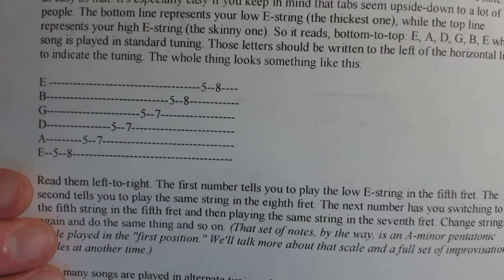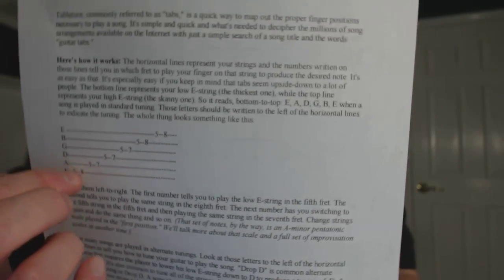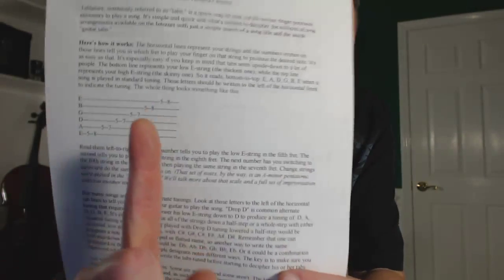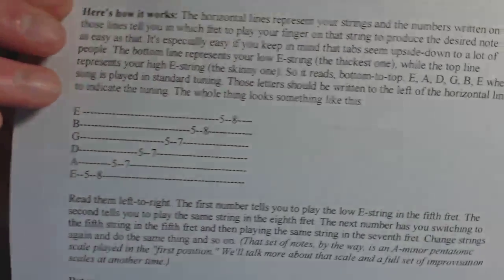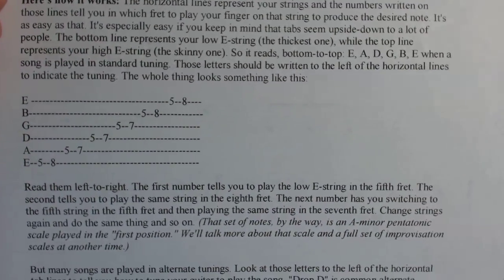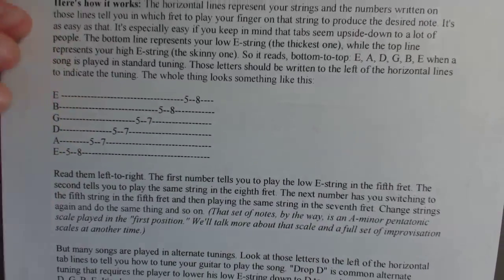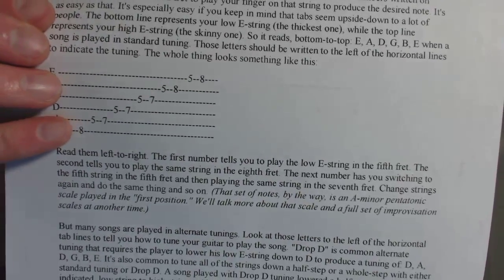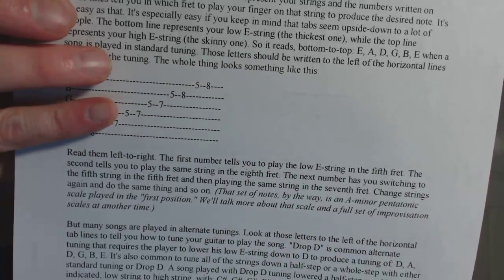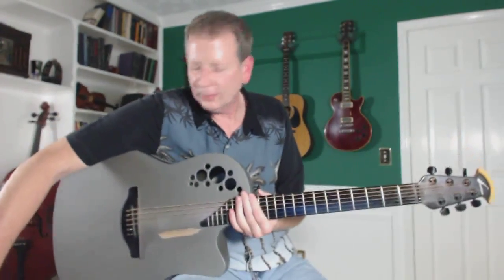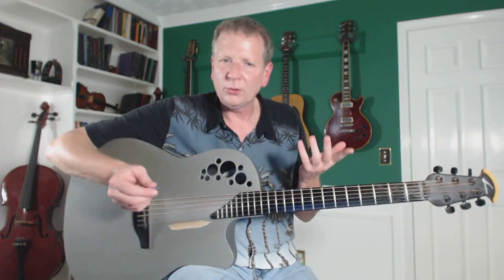It's very simple. Those numbers are just fret numbers, and you read it just like you're reading a book — left to right. If you have two numbers stacked on top of each other, that means you play them at the same time. None of these are stacked, so all these are individual notes. So that very first thing, you're playing the 5th fret on the low E string, then the 8th fret on the low E string. Then move up to the 5th string and play the 5th fret and then the 7th fret. Move to the 4th string and play the 5th fret and then the 7th fret. That's just the pentatonic scale, which you probably don't know yet because you're just getting started on guitar, but it's something you're going to learn a lot about later.